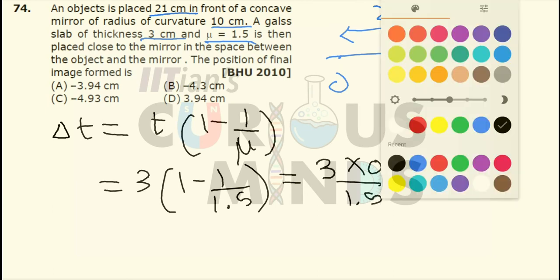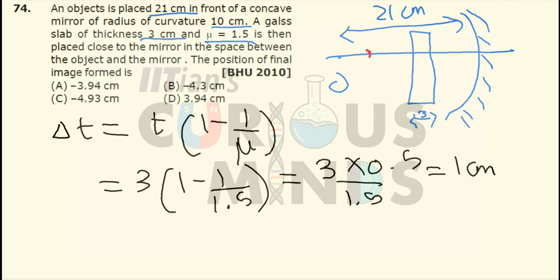So now the object has shifted on the right hand side by 1 cm. So now the new object is over here. The original distance from the mirror was 21. Now the distance is 20 cm.